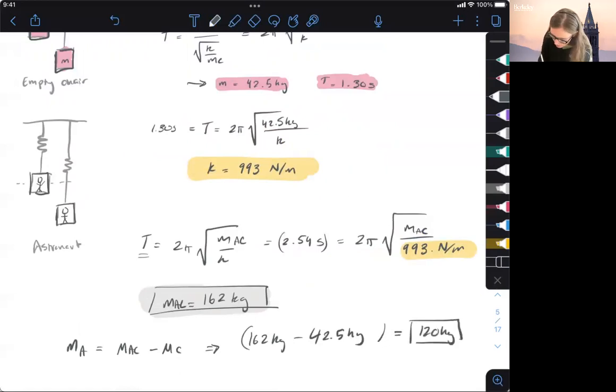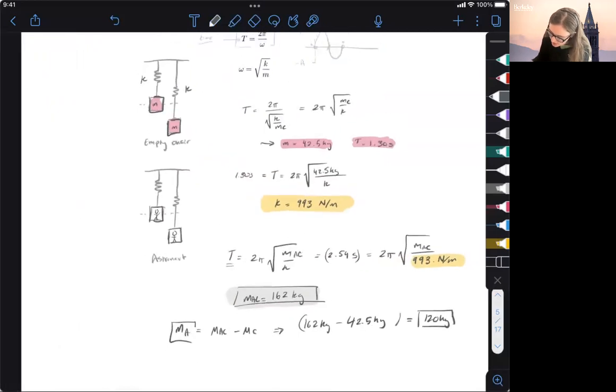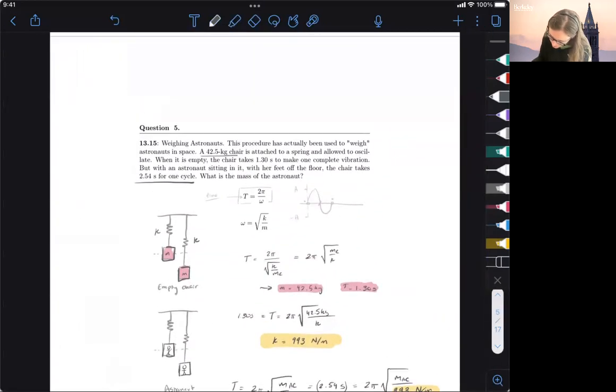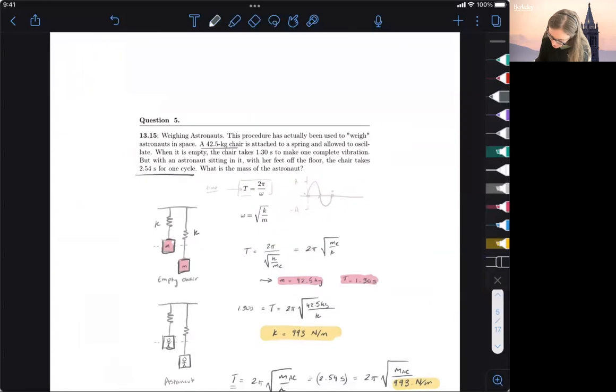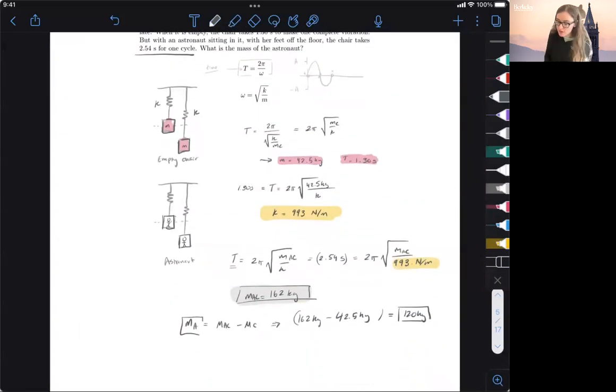And that's how much my astronaut weighs. I was able to figure that out because I knew how long it took for it to complete an oscillation. And I was able to relate that to the spring constant and then just solve for the masses and figure out the difference between the two. So let's move on to a few more complicated questions.